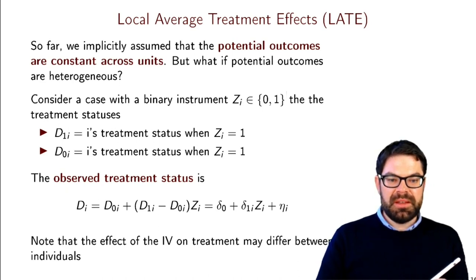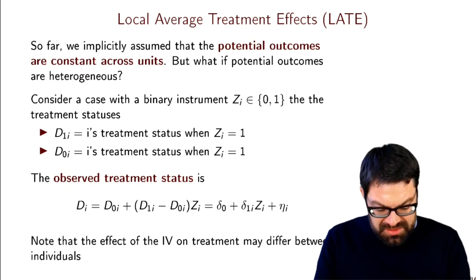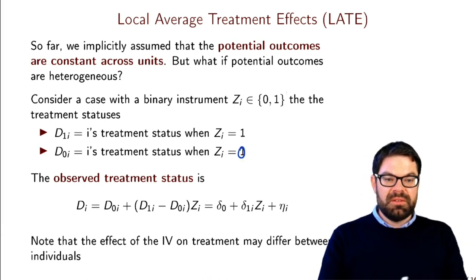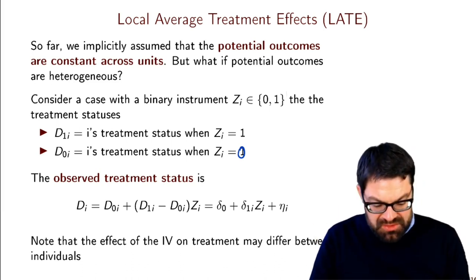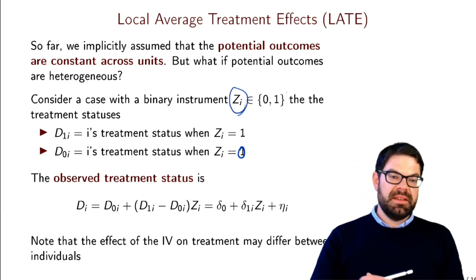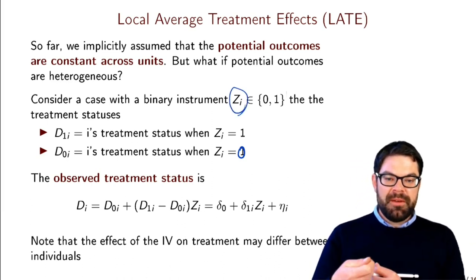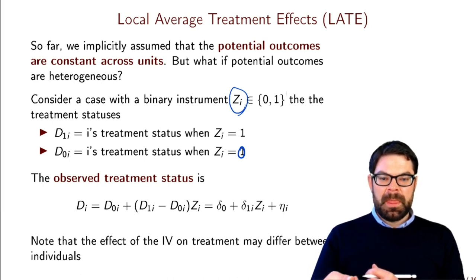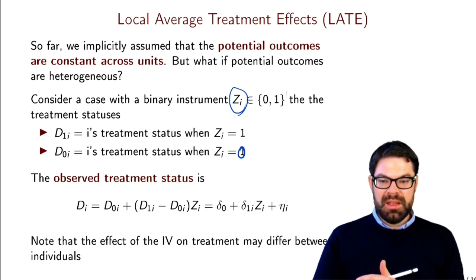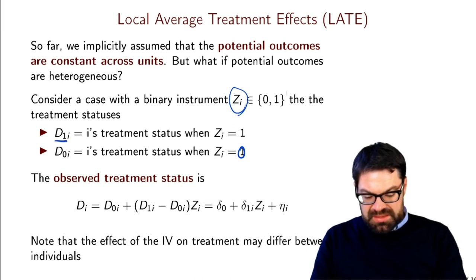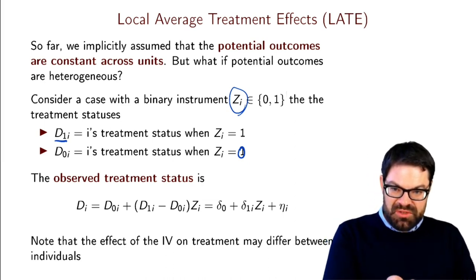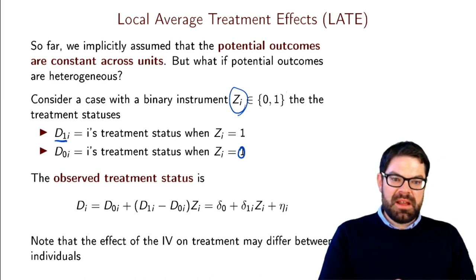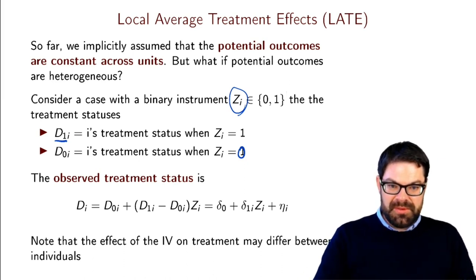Let's start with a bit of notation — note there is a typo, this should be a zero. We have a situation with a binary instrument Z. Think about the voucher example. We also have a binary treatment, which in the moving to opportunity example is whether the person actually moves or not. We denote D1 as the treatment status of person i when they have received the voucher, i.e., when the instrument is one.